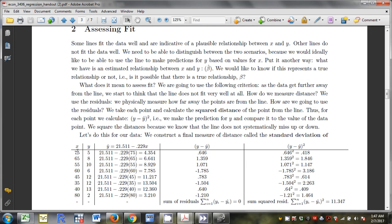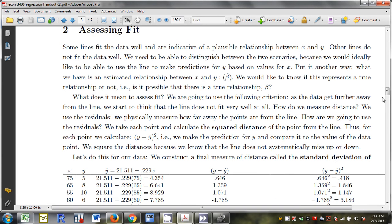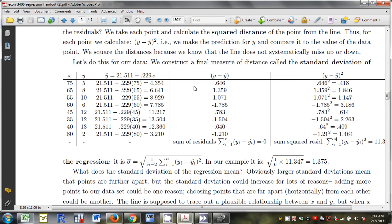Here are the eight data points that I have. Whenever I make a prediction, I plug in for x. So this is my line. 21.511 is the intercept. .229 is the slope. And I'm plugging in each value of x. 75, 65, 55, 60, 45, 35, 40, 80. And this is the predicted y. Now here's the actual y, the second column. This is the predicted y. The difference between the actual data and the prediction is the residual, and that's in this fourth column.